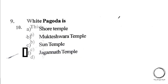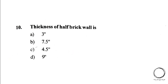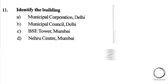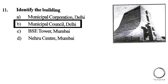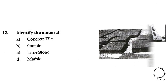Question 10: The thickness of a half brick wall is — A) 3 inch, B) 7.5 inch, C) 4.5 inch, D) 9 inch. The answer is C) 4.5 inch. Next question: Identify the building from the image. Options: A) Municipal Corporation Delhi, B) Municipal Council Delhi, C) BSE Tower Mumbai, D) Nehru Centre Mumbai. The answer is B) Municipal Council Delhi.